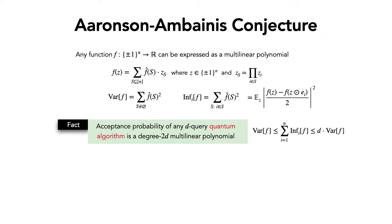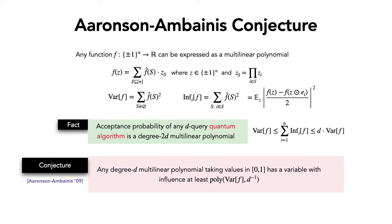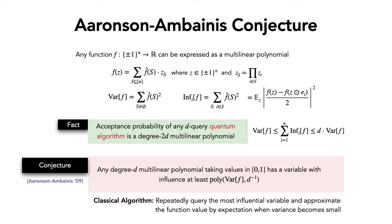This motivated Ernst and Meiss to propose the following natural conjecture: if you have a degree-D multilinear polynomial that is bounded — taking values between 0 and 1, representing a probability — then it always has a variable whose influence is at least polynomial in the variance and 1 over D. If this is always true, there is a natural classical simulation algorithm: query the most influential variable, which reduces the variance by at least its influence. Repeating this polynomially many times reduces the variance to near zero, after which you approximate the function by its expected value.